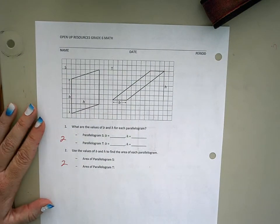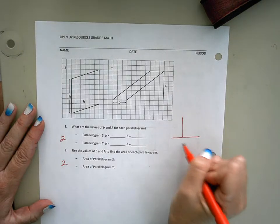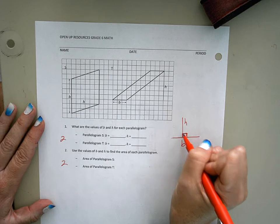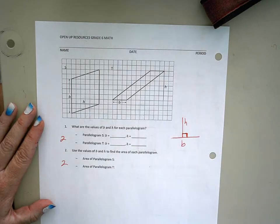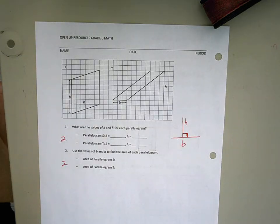Remember, for it to be a parallelogram, our base and our height need to form that 90-degree angle. So that's the big idea that we practiced in today's lesson. All right, hope that helps everybody, and I will see you tomorrow. Bye.